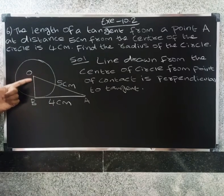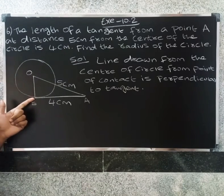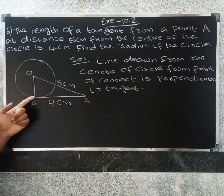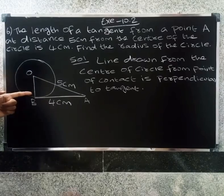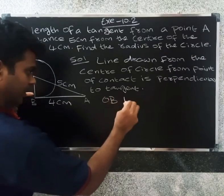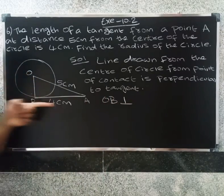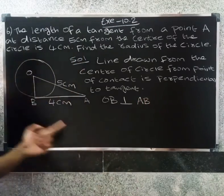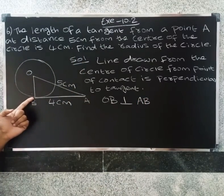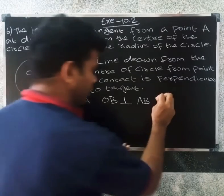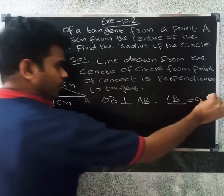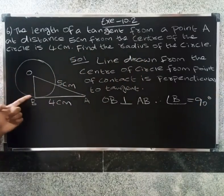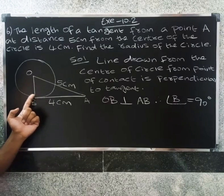Line drawn from the center of the circle to the point of contact is perpendicular to the tangent. So OB is perpendicular to AB, which means angle B is equal to 90 degrees.